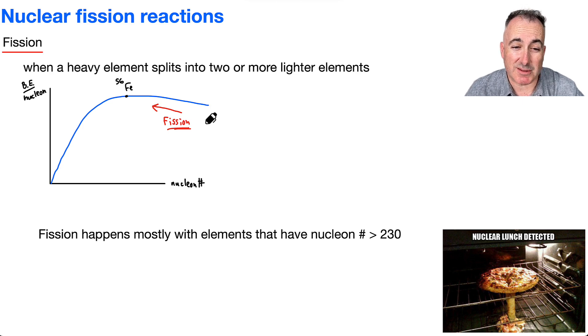Fission happens mostly with elements that have a nucleon number greater than 230. So they'll be over here. These ones out here are going to be the ones we're thinking about and analyzing.